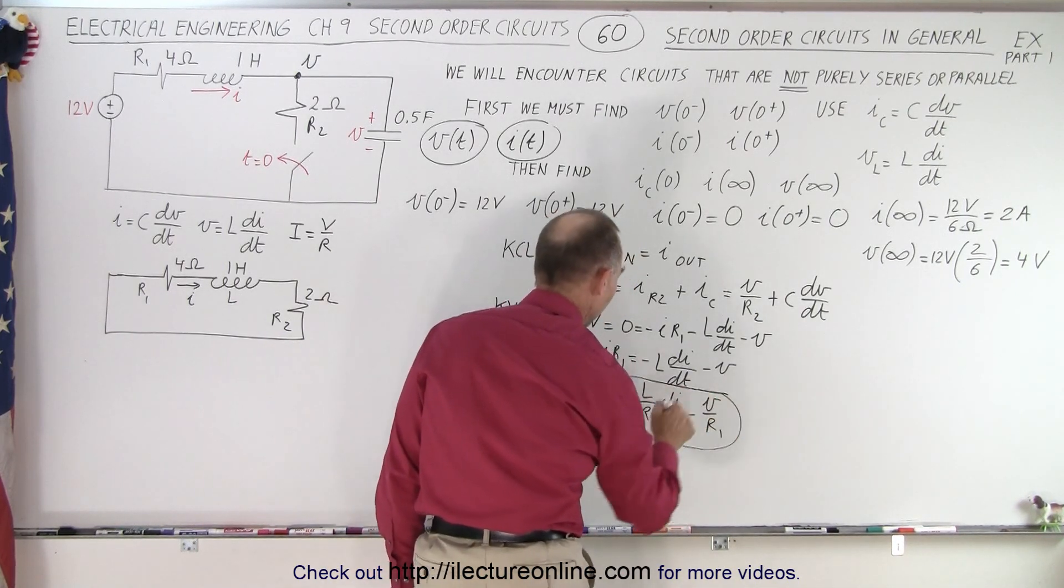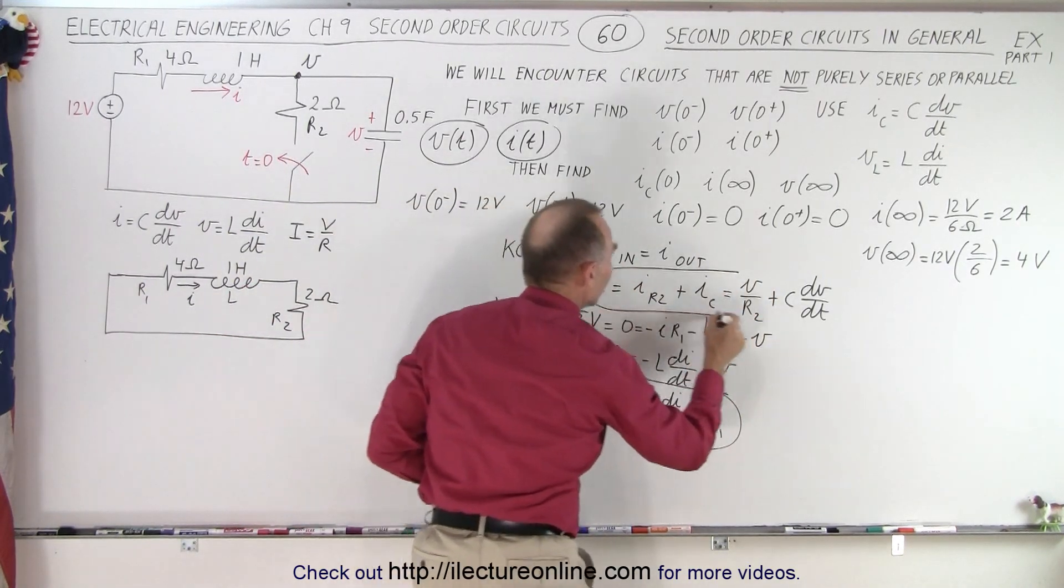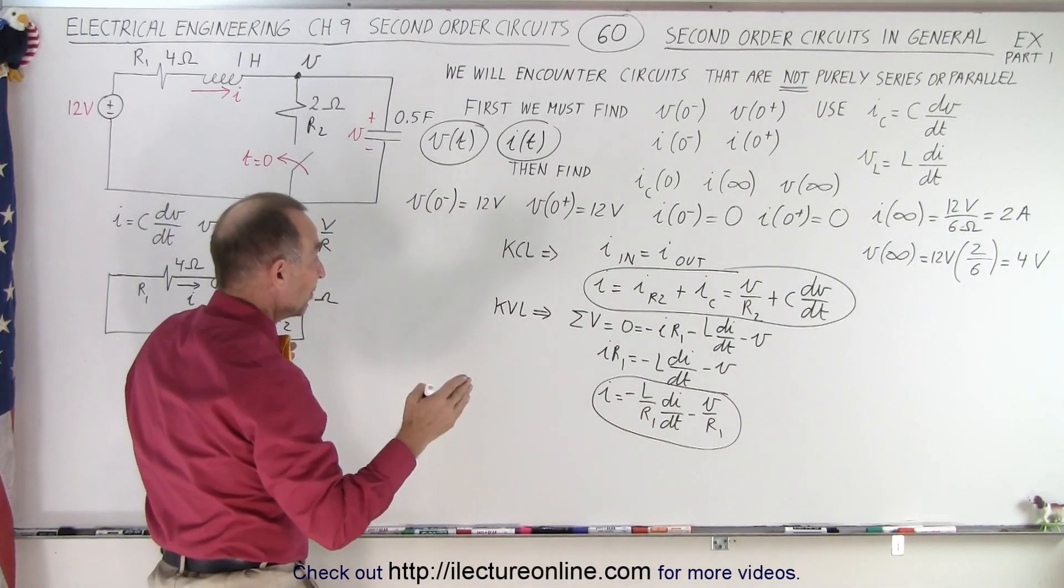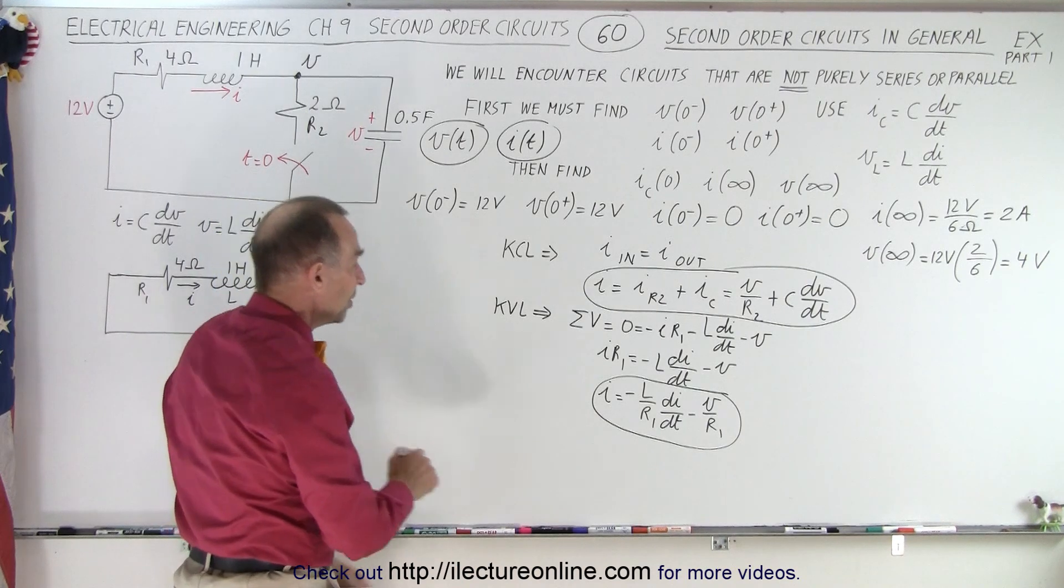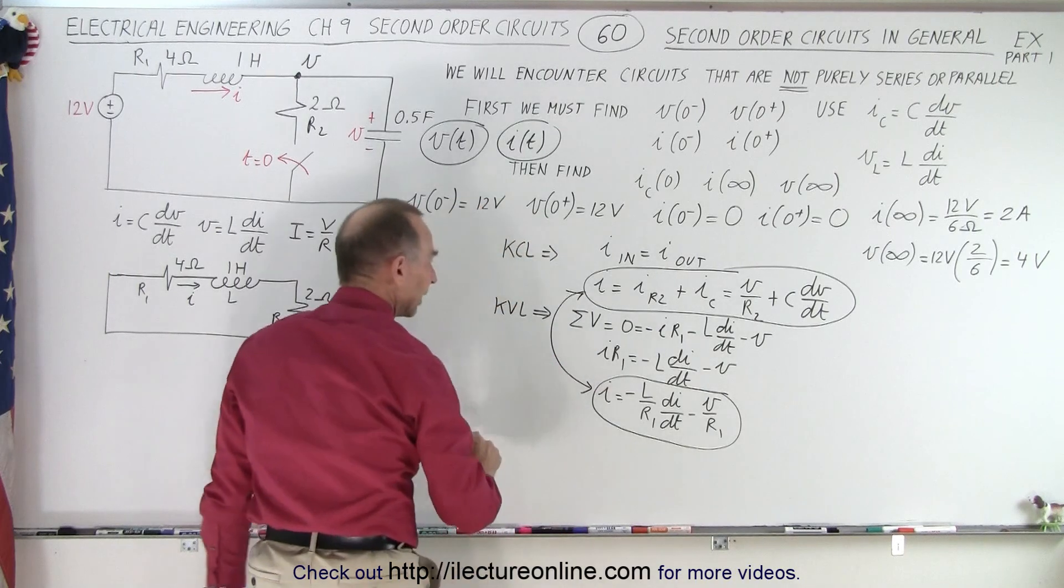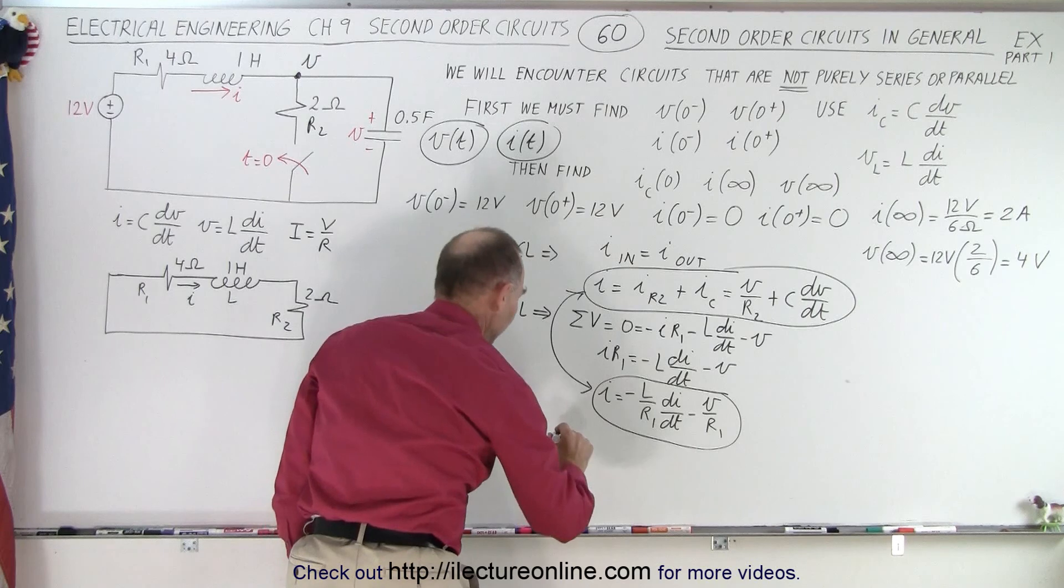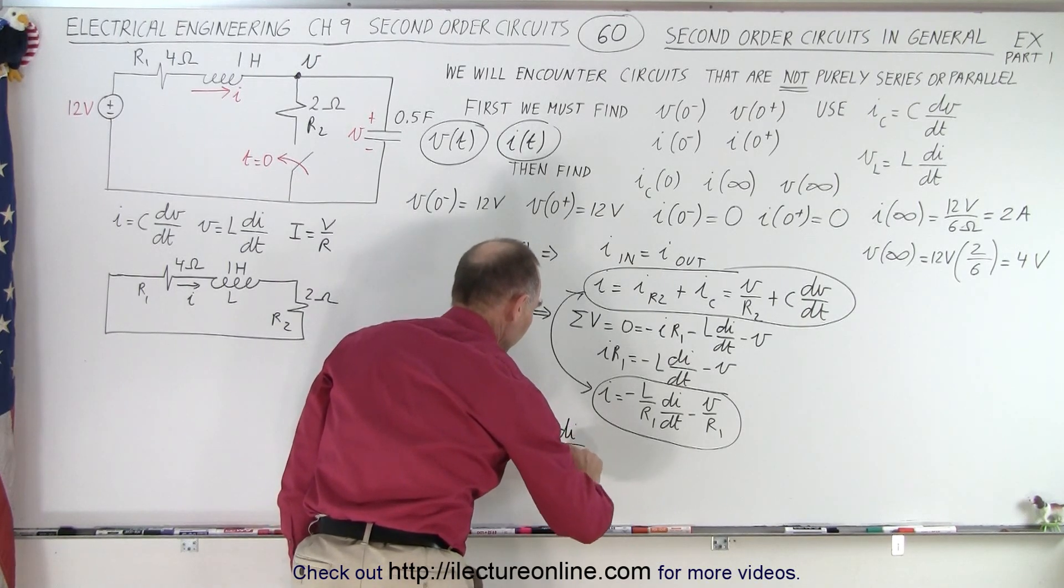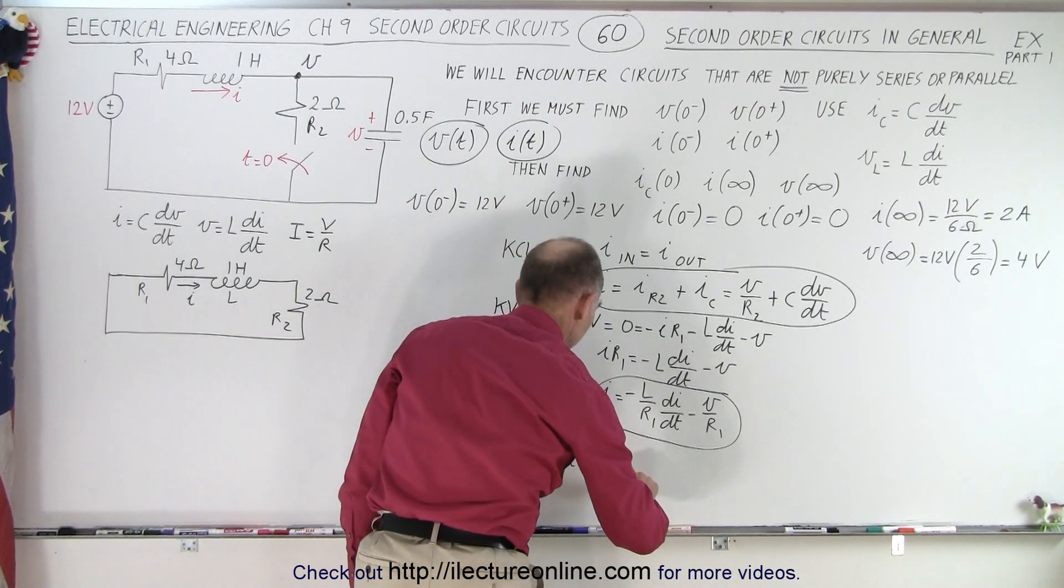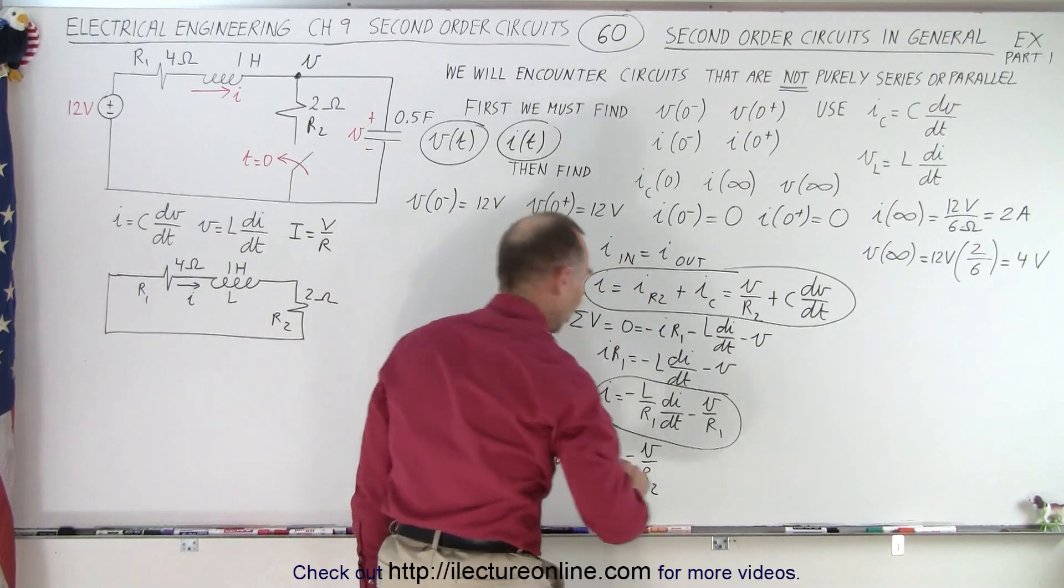So now I have an equation for I from the left part of the circuit, and I have an equation for I for the right part of the circuit. And of course, it's the same I. It's the I through the inductor, which means that those must be equal to one another. Which means I can set this equation equal to this equation. When I do that, I get the following.